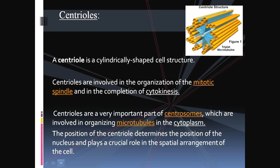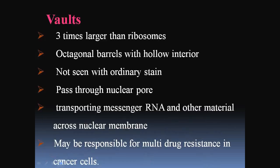Centrioles are cylindrical-shaped cell structures involved in the organization of the mitotic spindle and in completing cytokinesis. Centrioles are an important part of centrosomes, which are involved in organizing microtubules. The position of the centriole determines the position of the nucleus and plays a crucial role in the spatial arrangement of the cell. The nuclear pore complexes are three times larger than ribosomes, octagonal barrels with a hollow interior, not seen in ordinary state. They pass through nuclear pores, transporting messenger RNA and other material across the nuclear membrane, and may be responsible for multi-drug resistance in cancer cells.